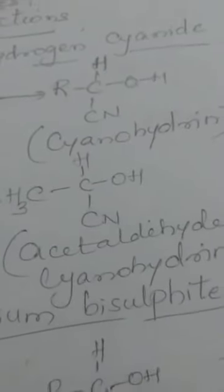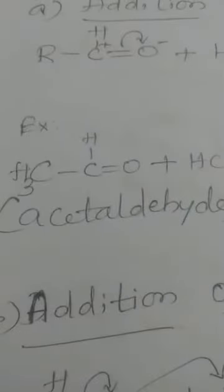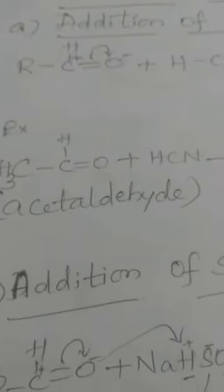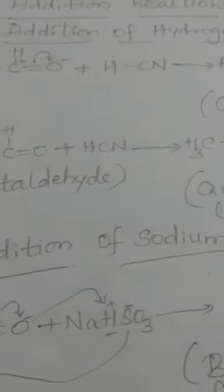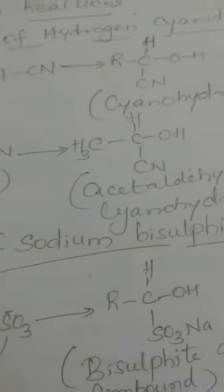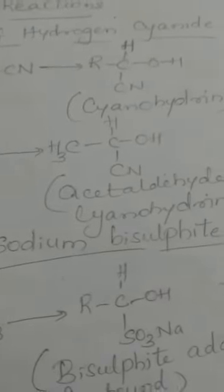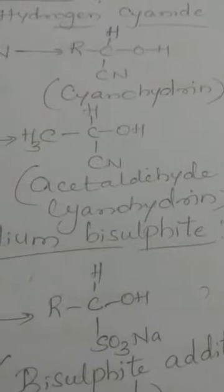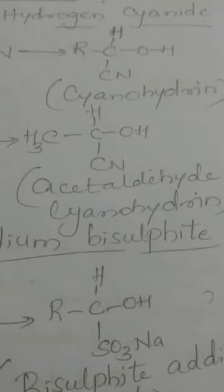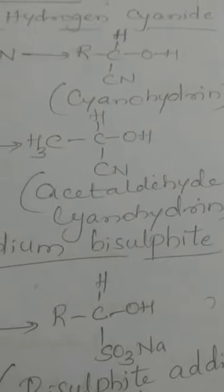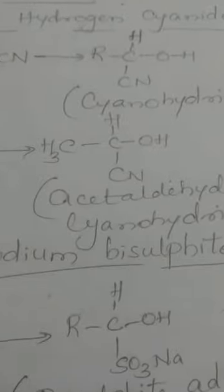For example, if you take acetaldehyde CH₃CHO and allow it to react with hydrogen cyanide HCN, the product formed will be acetaldehyde cyanohydrin CH₃CHOHCN. Both the cyano group and the hydroxy group are bonded to the same carbon.